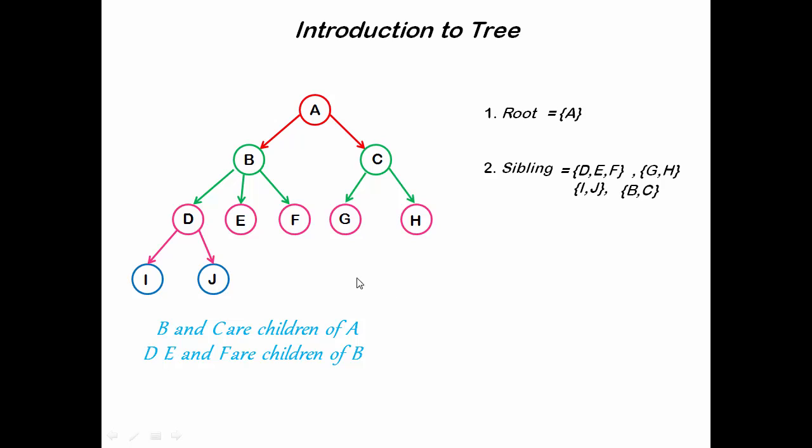Now the question is, are F and G siblings? No, because F's parent is B and G's parent is C. Their parents are different, so they are not siblings. But you can see here, their grandparent is same, so we can say they are cousins.